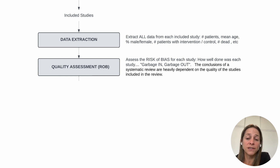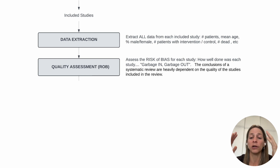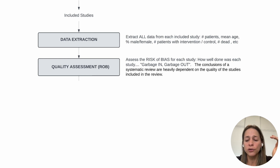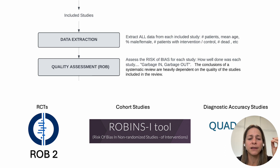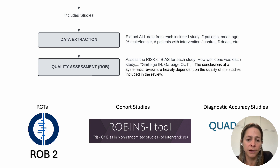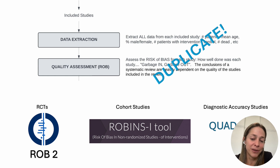After data extraction, you need to assess those 20 studies for quality — specifically, whether they are at high, low, or unclear risk of bias. This helps you assess how confident you are that the estimated results reflect true results, and allows you to make recommendations based on the strength of the evidence. There are several tools for assessing risk of bias, and a different tool is usually appropriate for each study design. For randomized controlled trials you can use the ROB2 tool, for cohort studies the ROBINS tool, and for diagnostic accuracy studies the QUADAS tool. This also has to be done in duplicate by two independent reviewers.